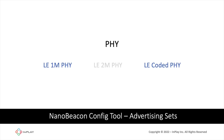The IN100 supports both the 1M PHY and the LE Coded PHY. The 1M PHY is the default mandatory PHY for BLE devices, introduced in the original version of Bluetooth Low Energy in version 4.0 of the specification. The LE Coded PHY was introduced in Bluetooth 5.0 and is typically used where longer communication range is needed or more robust communication in a noisy environment. Keep in mind that both scanners and broadcasters need to support LE Coded PHY for the system to be operational.